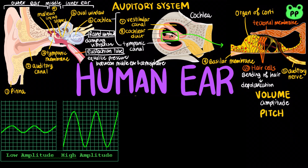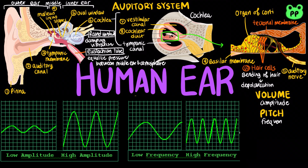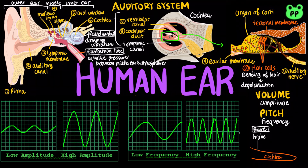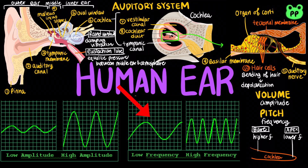On the other hand, pitch is determined by the frequency of a sound wave, which is the number of vibrations per unit time. The cochlea can distinguish pitch because the basilar membrane is not uniform along its length. The base of the cochlea is relatively narrow and stiff, which responds to waves at higher frequency, whereas the apex of the cochlea is wider and more flexible, which responds to pressure waves at lower frequency.